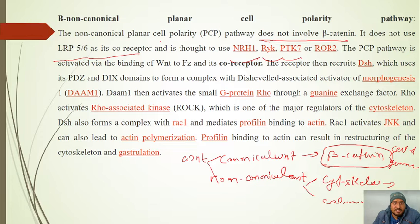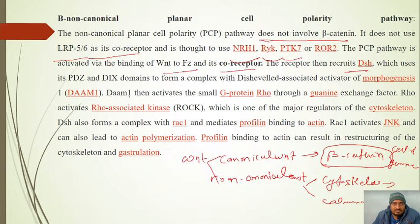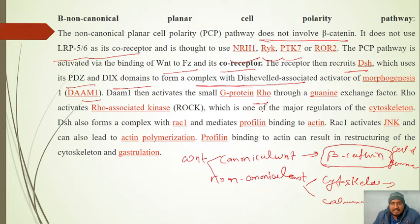The non-canonical PCP pathway is activated via WNT binding to the Frizzled receptor, which recruits Dishevelled. In Dishevelled, PDZ and DIX domains are important. Dishevelled and Daam form a complex, then Daam activates Rac, Rac activates Rock, and Rock activates actin and profilin polymerization, which is responsible for cytoskeleton formation.